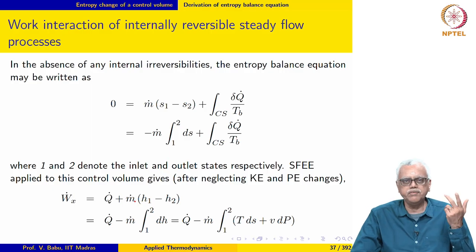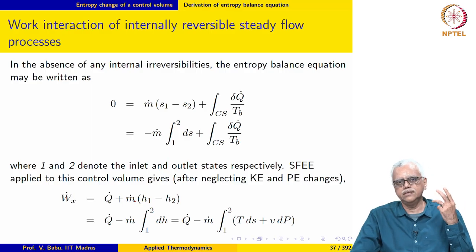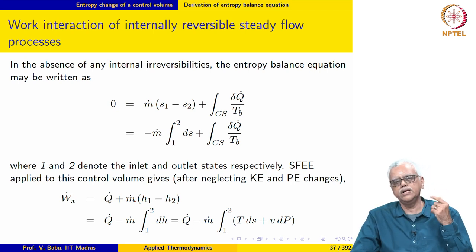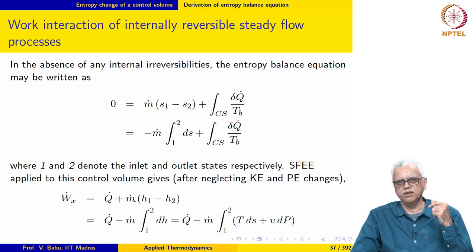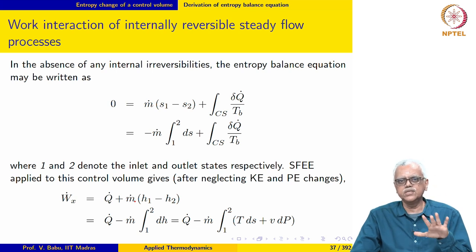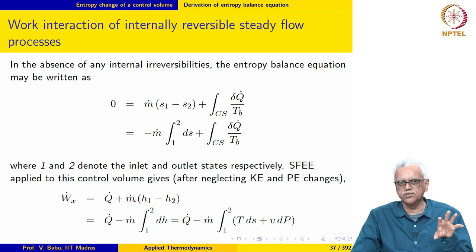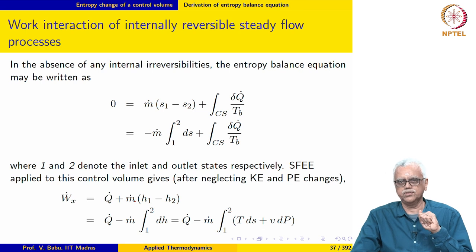In the previous course, it was mentioned that the reversible isothermal and the reversible adiabatic processes are very special processes in thermodynamics. Based on this fact, we also put together the Carnot cycle out of these two processes alone. The Carnot cycle comprises entirely of the reversible isothermal and the reversible adiabatic process.